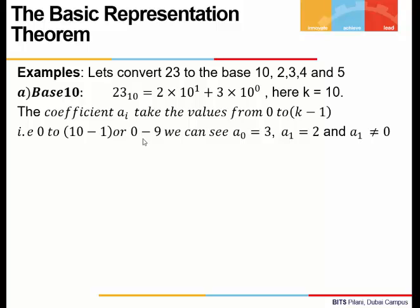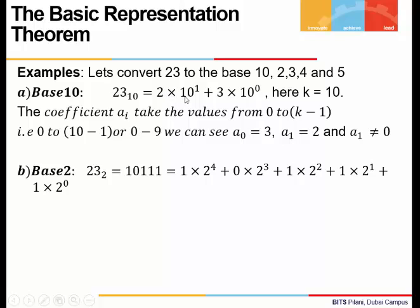We know 23 is 2 times 10 to the power 1, plus 3 times 10 to the power 0. We have represented 23 to base 10 — this is our decimal representation. The coefficient of the highest power of 10 is non-zero (it's 2), and all coefficients 2 and 3 lie from 0 to 9. So a_0 is 3 and a_1 is 2.